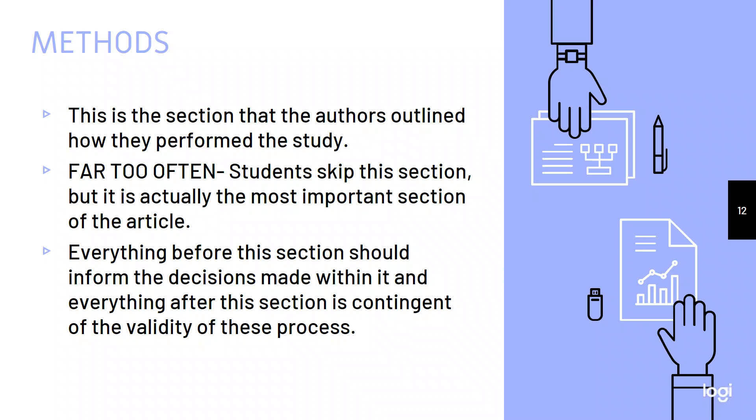So the methods section is where the authors outline what they performed. So often, it is very obvious that students are not reading this section. Read this section. It is the most important part of the paper because if they mess up the methods, nothing that comes after it matters, right? Nothing that came before it matters because the methods are messed up. So if you look at the results and you're like, these are great results. I mean, they did some amazing things and then you realize within their methods, they didn't sanitize something or they didn't follow proper protocol. So therefore what they did isn't possible and it's not generalizable and it's not replicable. The methods should be replicable.